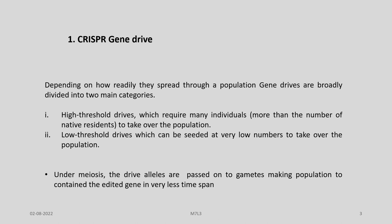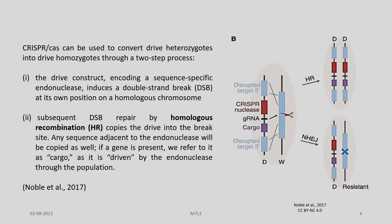Number one is the high threshold drives, which require many individuals — more than the number of native residents — to take over the population. Then we have the low threshold drives, which can be seeded at very low numbers to take over the population. Under meiosis, the drive allele is passed on to gametes, making the population contain the edited gene in a very short time span.